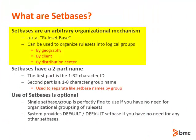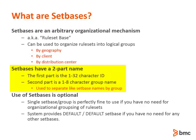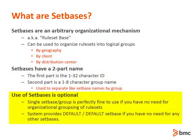Set bases, also known as rule set bases, provide a way to organize your rule sets into logical groups. This may be done by geographical location, client, business unit, or whatever makes sense for your enterprise. A set base name has two parts: the first is the 1-32 character ID and the second is the 1-8 character group name. Having two parts to the name provides additional flexibility when using set bases. It is not required, however, to use more than one set base.